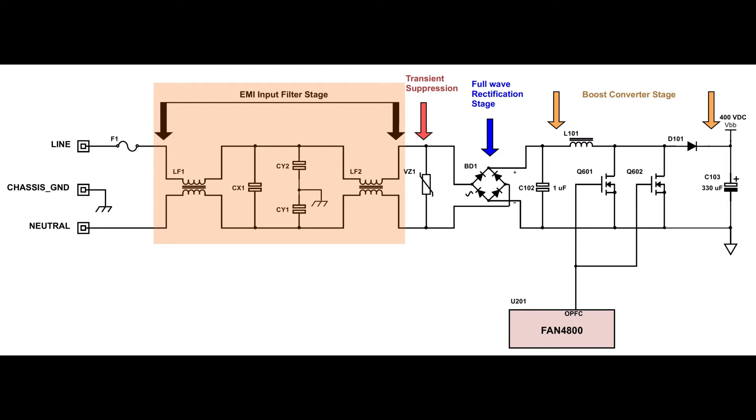The CX and CY capacitors are safety capacitors. Safety capacitors are used in this type of stage because they fail in predictable ways. The CX capacitor is used as an across the line capacitor. And when it fails, it fails as a short circuit, allowing fuse F1 to burn open. The CX capacitor is used for differential noise filtering.